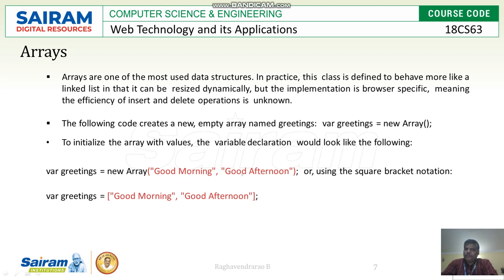Another method of creating an array uses square brackets: variable greetings equals ['good morning', 'good afternoon']. When using square brackets, there is no need to write new Array — it becomes an array object itself and is stored as an object.